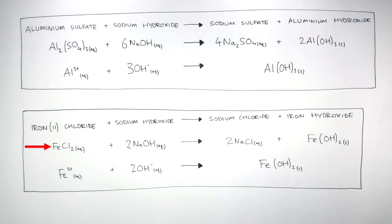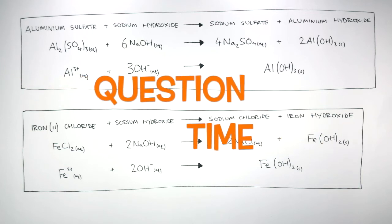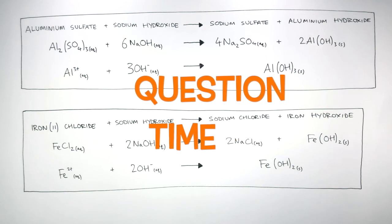Here is a word equation, a balanced symbol equation, and an ionic equation to summarise what happens when iron 2 chloride reacts with sodium hydroxide to form sodium chloride and iron hydroxide. Iron hydroxide is the green precipitate that is formed, indicated by the S which means a solid. It's question time.